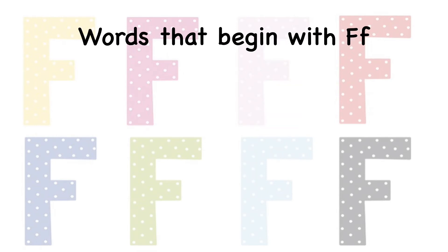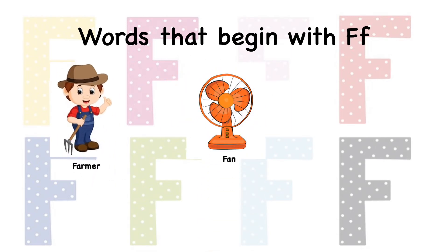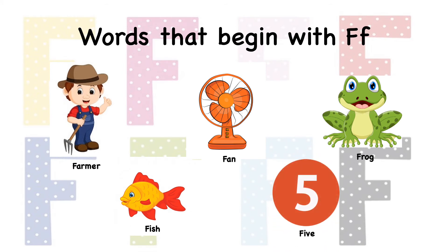Now here are some of the words that begin with letter F: farmer, fan, frog, fish, and five. For farmer, the beginning sound is 'fa fa' — farmer. For fan, the beginning sound is 'fa fa' — fan. And same thing for frog — 'fa fa' frog. In fish, the beginning sound is 'fa.'